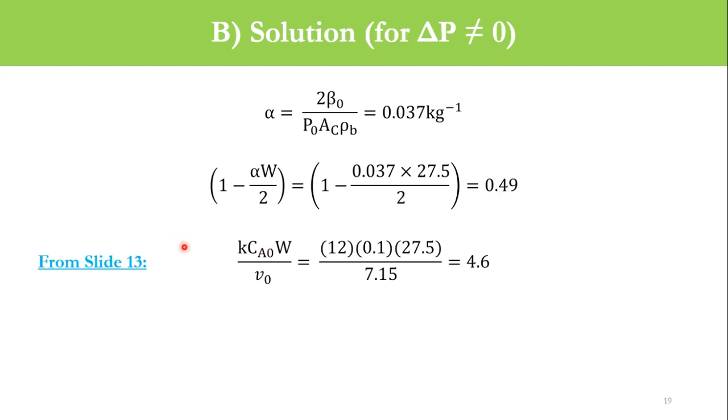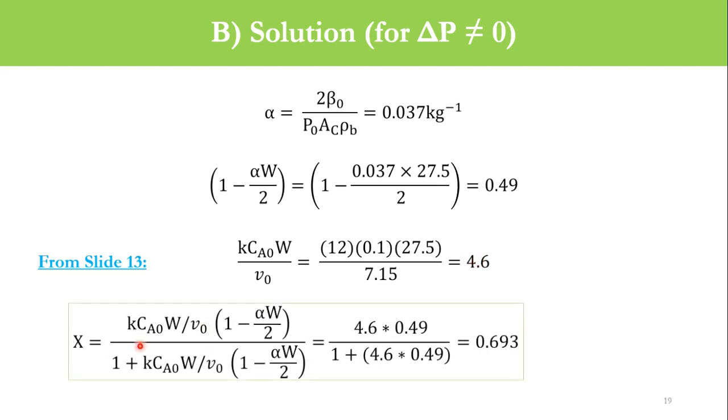From slide 13, kCA0W/V0 was 4.6. Accordingly, X equals kCA0W/V0 times bracket value, which is 4.6 times 0.49 divided by 1 plus 4.6 times 0.49. Accordingly the conversion is 69.3%.